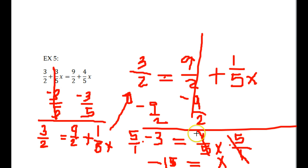Once again, you could substitute negative 15 in for x and check if the left side equals the right side — then you would be good to go. If not, then you know you made an error somewhere and need to fix it. That is our example on solving two-sided equations.